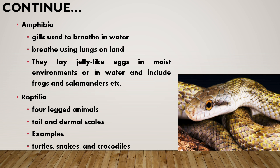Birds have wings, feathers are present, they have a beak, and reproductive organs are also present. They lay eggs — for example, chickens. Amphibia are organisms that have gills used to breathe in water and use lungs on land for breathing.